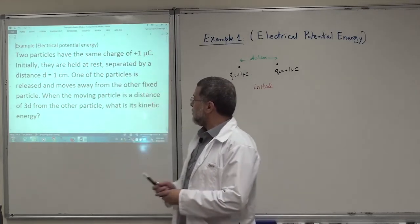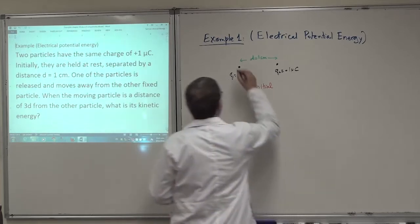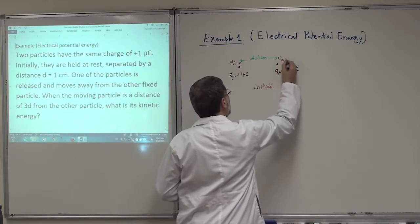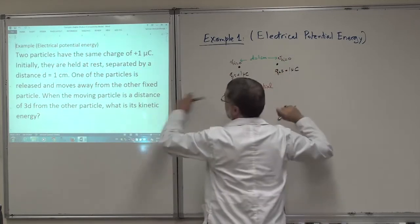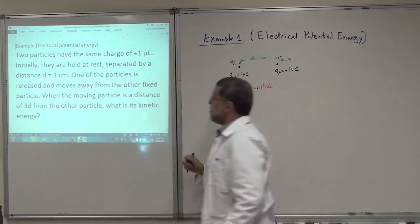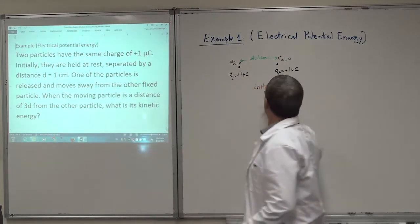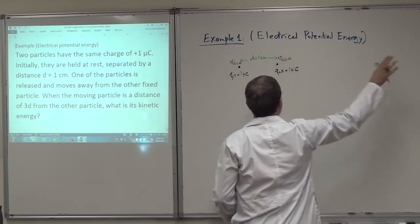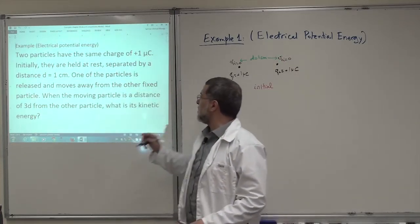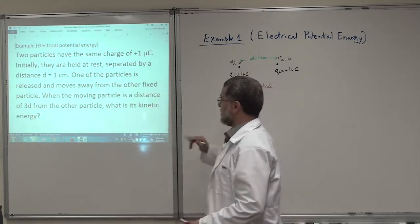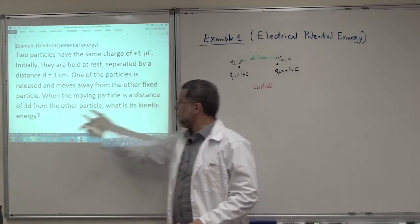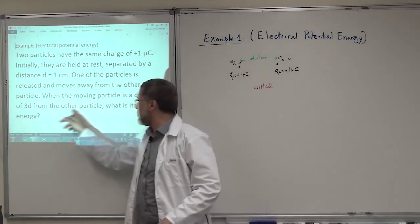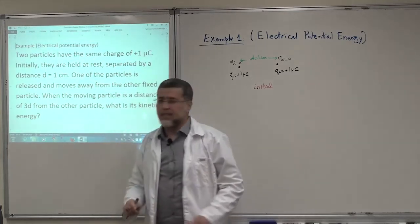One of the particles is released. Initially, V1 initial is zero and V2 initial is zero — both are at rest because they are held at rest. One particle is released and moves away from the other fixed particle. When the moving particle is at a distance of 3D — so if D is one centimeter, 3D will be three centimeters — what is its kinetic energy?